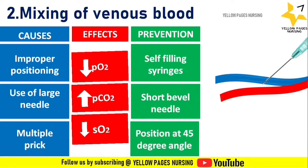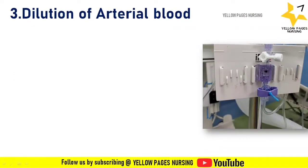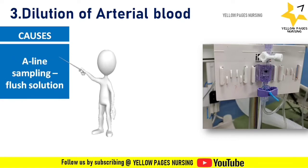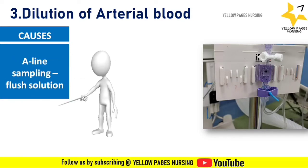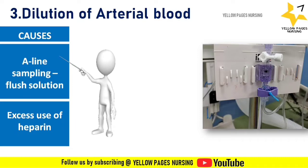Next comes dilution of arterial blood. While collecting an ABG sample from an arterial line, there may be chances of mixing the flush solution with the sample, which creates dilution. Excess use of heparin may also cause dilution of the sample.